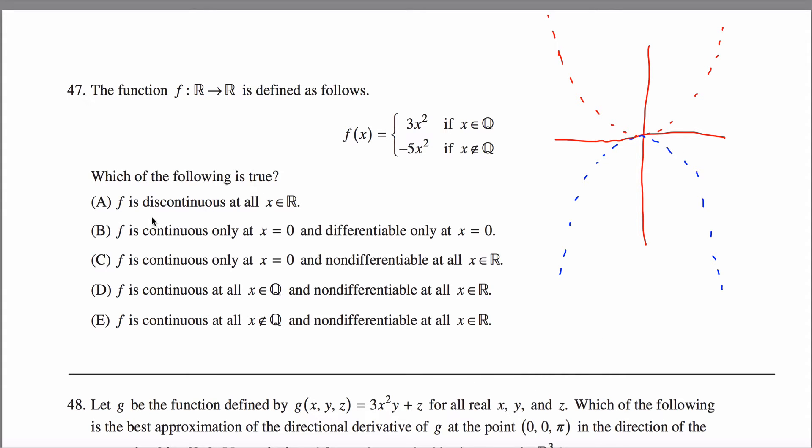Which of the following is true? F is discontinuous everywhere. No, that's not true. My function is continuous at 0 because at 0 these two functions agree on their value and their derivatives would both be equal to 0. The derivative of this function would be 9x, the derivative of this one would be negative 10x, and in either case when I plug in x equals 0...